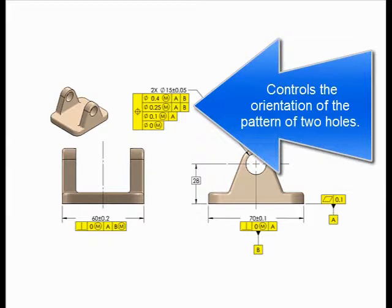Since the datum referencing is there only for orienting the pattern, the gauge elements or pins that are going to check the position of 0.25 have to remain parallel to both datum planes but be free to move around in location, and you'll see how that's accomplished.